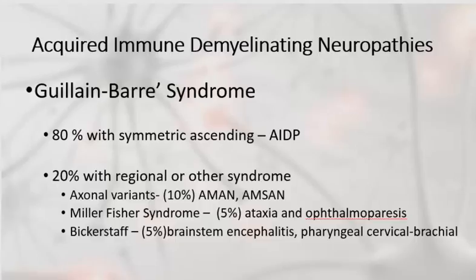The categorization schema we're going to use in these talks splits up the demyelinating from axonal neuropathies and hereditary from those that are acquired. A prime example of an acquired immune demyelinating polyneuropathy is Guillain-Barré, which typically causes an ascending and symmetrical paralysis with relatively little sensory involvement.